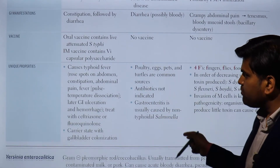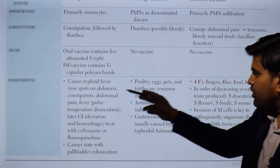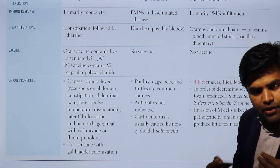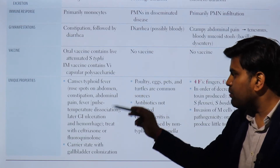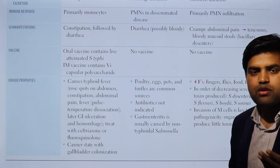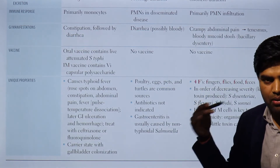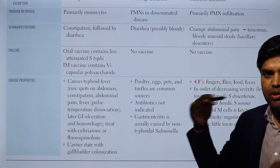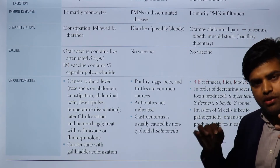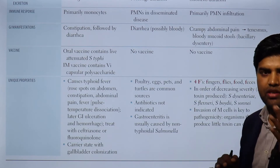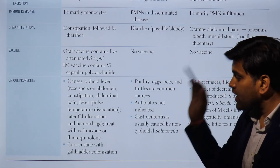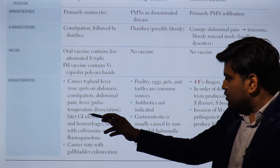A unique property of Salmonella typhi is causing typhoid fever with rose spots on the abdomen, constipation, abdominal pain, and fever with relative bradycardia — also called pulse-temperature dissociation. Normally, a one-degree increase in body temperature causes a 10 beats-per-minute increase in heart rate. In typhoid fever, despite high fever, the heart rate remains normal. This dissociation is a characteristic feature of typhoid fever.